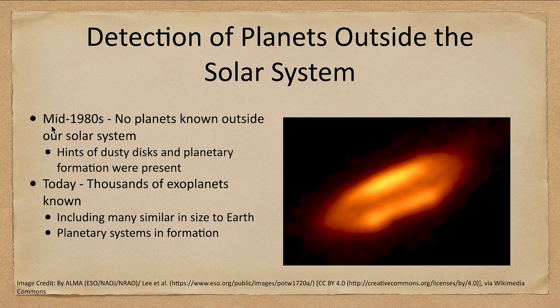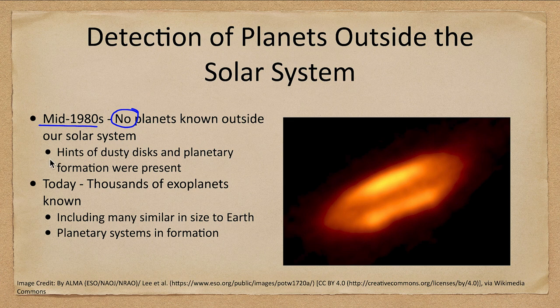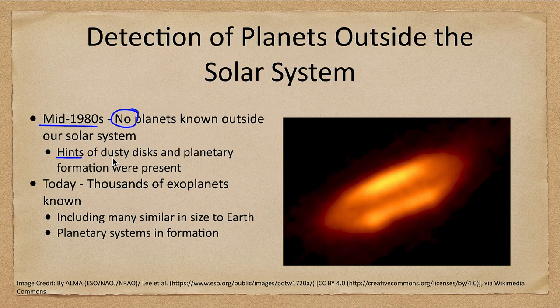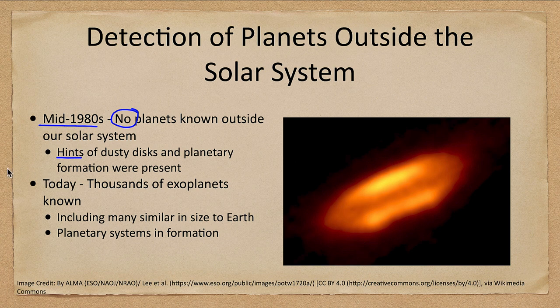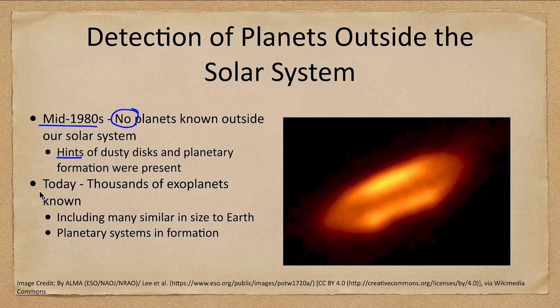As recently as the mid-1980s there were no planets known outside of our solar system. However, we did have hints of dusty disks of material and planetary formation, so we thought that maybe there were planets. It looked like planets were going to be likely but we were unable to detect them at the time.